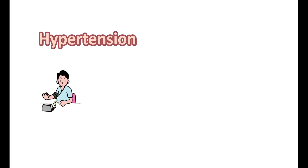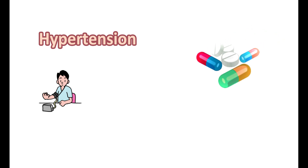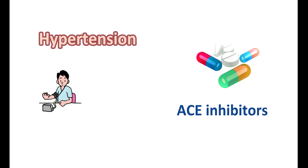First, let us see the clinical use of ACE inhibitors. One of the widely used indications is in the treatment of hypertension. When blood pressure is increased, many medications can be given to reduce it. ACE inhibitors are one category of drugs that act on the renin-angiotensin system to control blood pressure. Particularly, these medications can be given when blood pressure is above 140/90, either alone or combined with other antihypertensives based on the elevation in blood pressure.